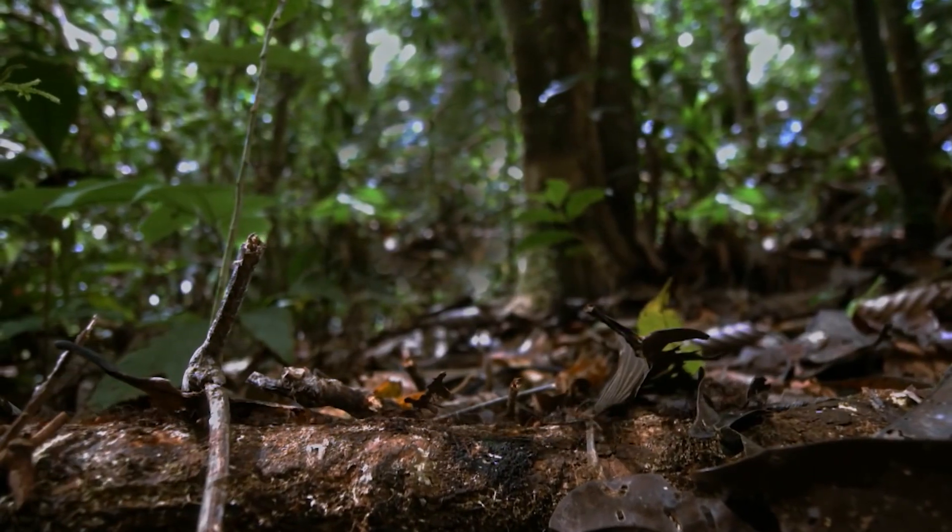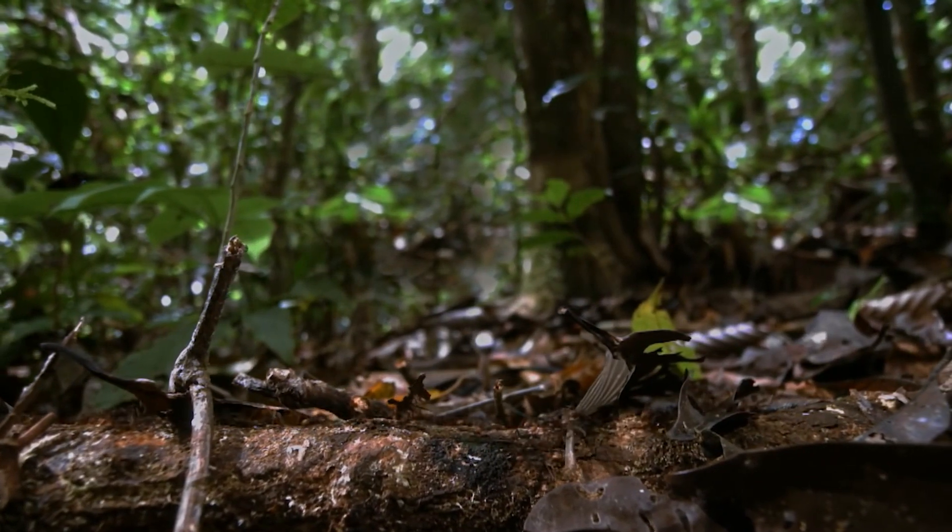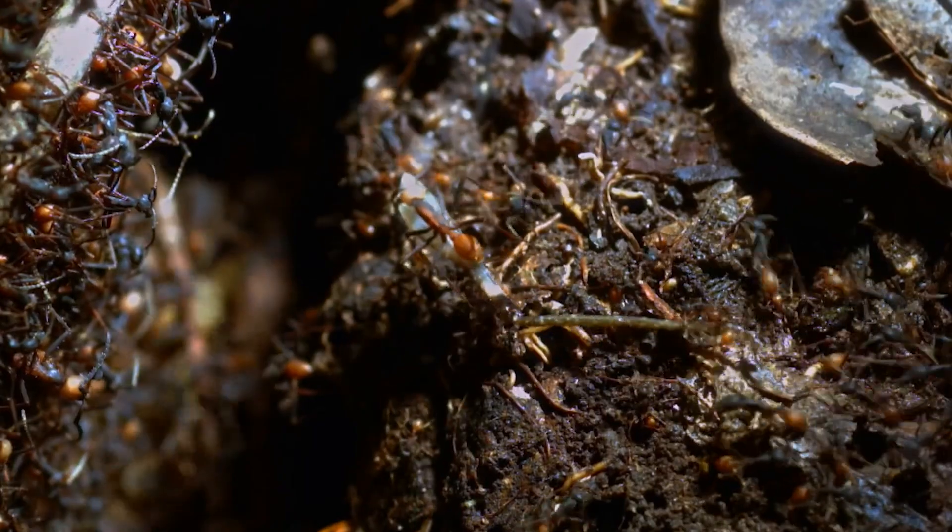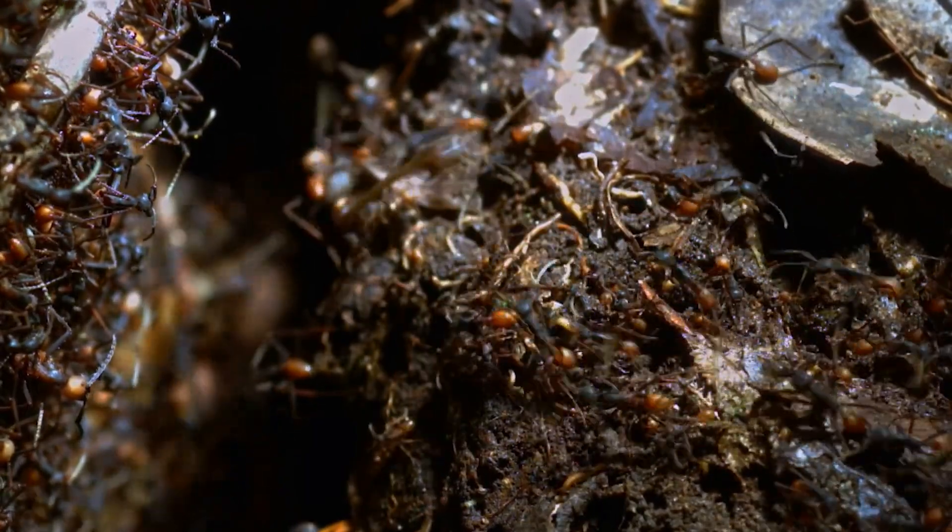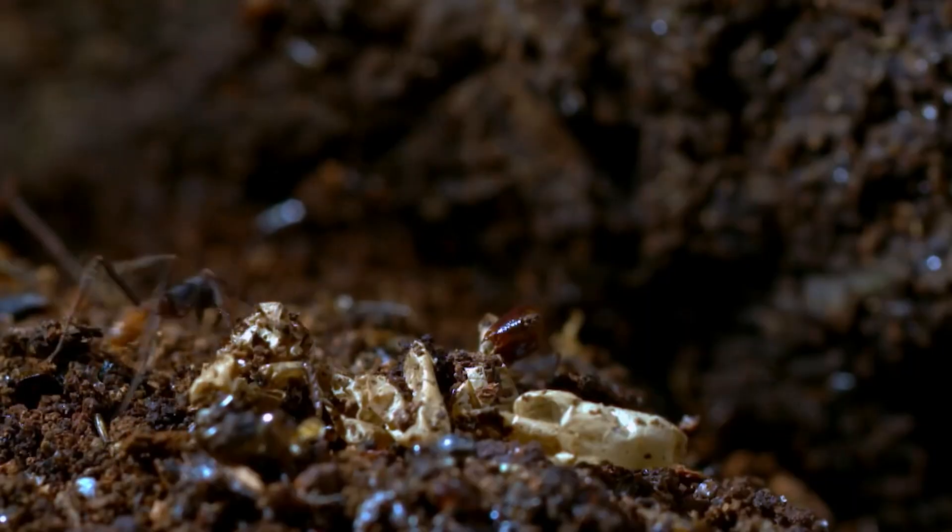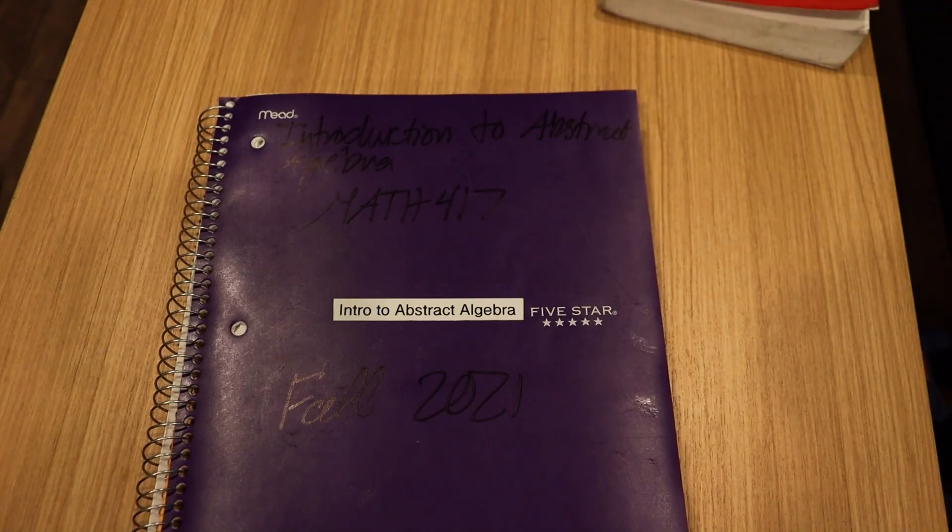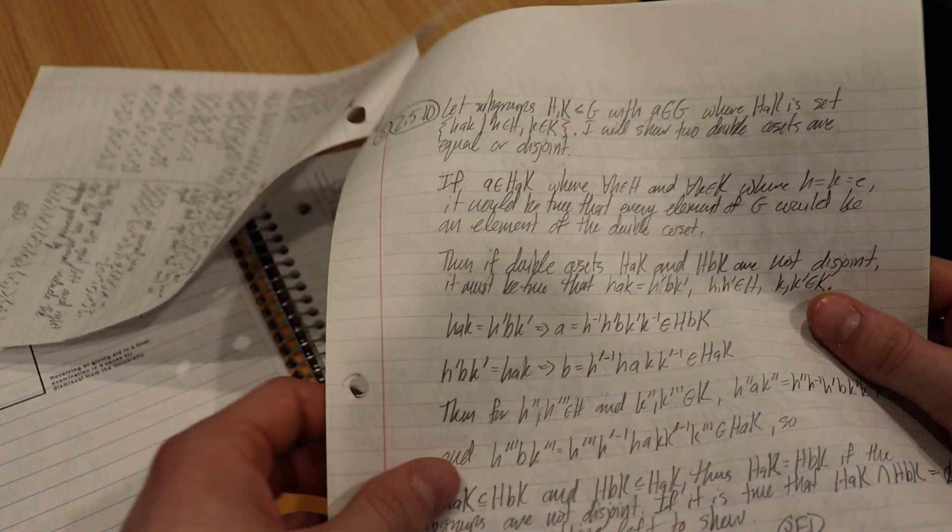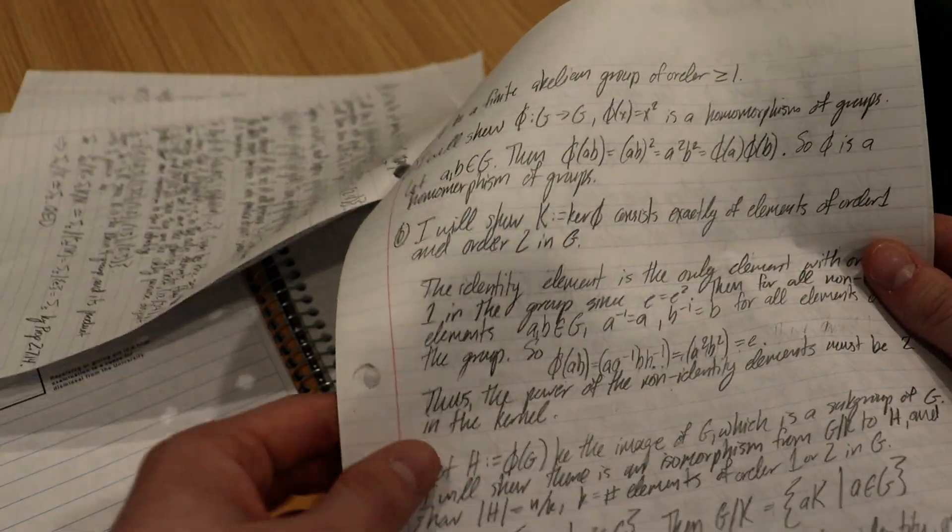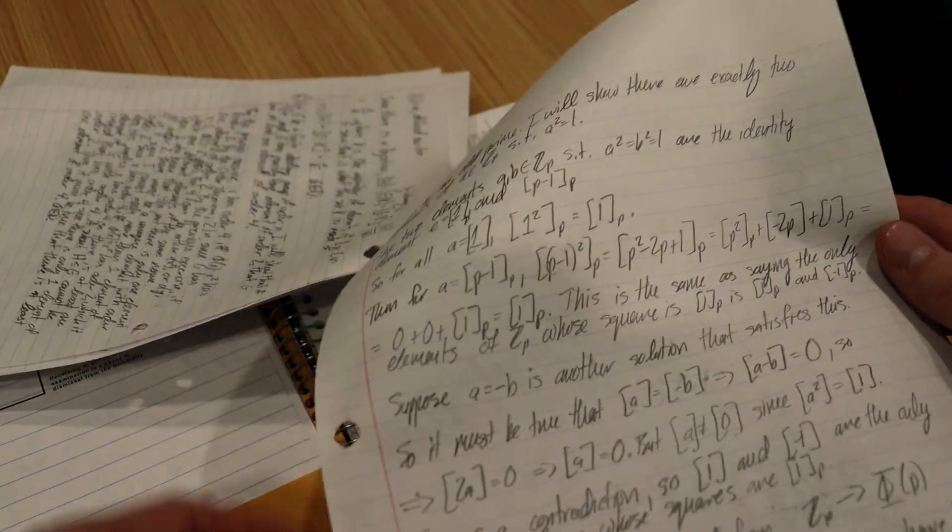It's kind of like how we see ants. We're so much larger than them that we forget that they live in their own complex three-dimensional world with its own intricacies. This contrived analogy is meant to demonstrate that we all struggle with similar problems, even if we don't realize it. We just have to come together to overcome them.